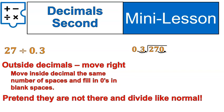The decimal inside that division symbol moves the same number of spaces, and we have to fill in zeros. With the number 27, we don't have a decimal written, which means the decimal is at the end. And so we shift it over one space there and fill in the zeros. Now we'll divide like normal. We pretend that this says 3 on the outside and 270 on the inside, or in other words, 270 divided by 3.